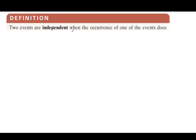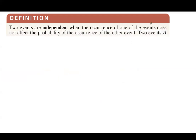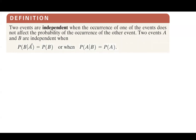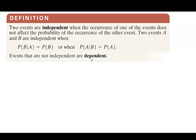Let's look at another definition. Two events are called independent from each other when the occurrence of one event has nothing to do with the other — that is, it doesn't affect the probability of the other event. Two events A and B are independent when P(B|A) equals P(B), or P(A|B) equals P(A). Events that are not independent are called dependent.